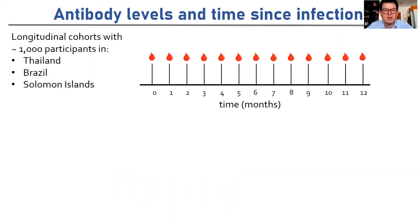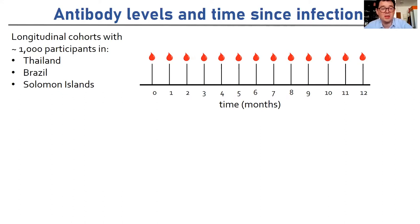In order to test and validate this, we need to work with some epidemiological data. We use a classic study design in malaria epidemiology: a prospective longitudinal cohort in a malaria endemic region. The study design is to enroll a thousand healthy participants, follow them up for one year, and take a blood sample every month. We've implemented three of these cohorts in Thailand, Brazil, and the Solomon Islands.